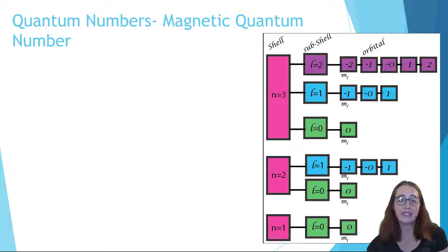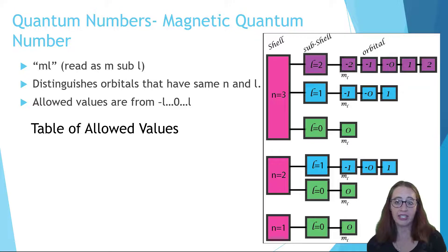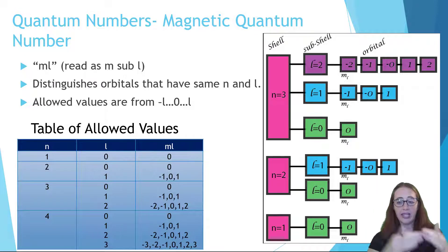m sub l is the magnetic quantum number. This distinguishes orbitals that have the same n and l but have different orientations. For example, we've discussed that there are three different p orbitals in each energy level. This comes out of the allowed possibilities for m sub l. m sub l is allowed to equal plus l all the way to minus l and all the integers in between. So in other words, if l is equal to one, or we have a p orbital, then m sub l is allowed to equal negative one, zero, and one. Since there are three allowed values, there are three p orbitals.